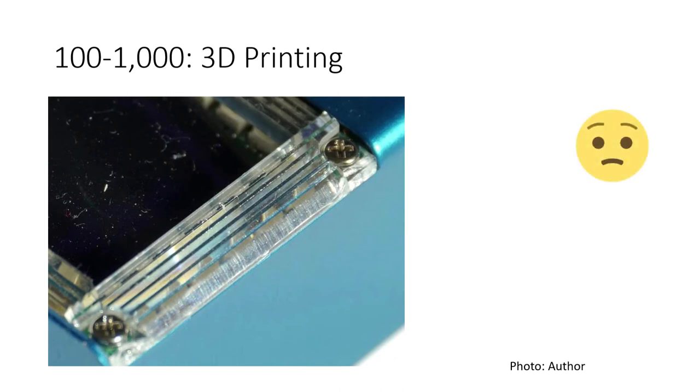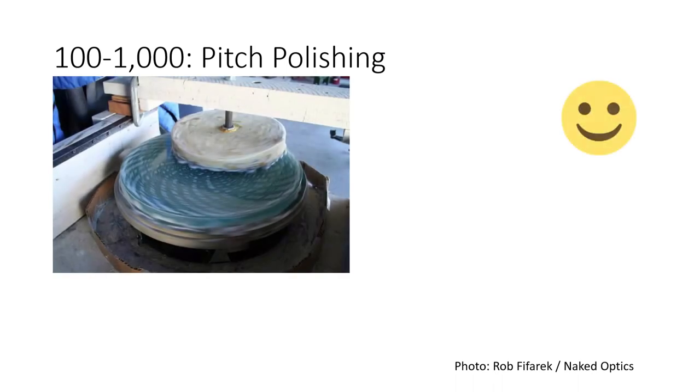3D printing is generally not cheap enough for this quantity. Again, you're going to reach that crossover point in a hundred to a thousand, where you're going to want to spend the money on a mold and amortize it instead of 3D printing every part one at a time. But pitch polishing is still great. It's still economical. I mean, up until recently, almost all of our camera lenses, Nikon, Canon, they were all pitch polished.